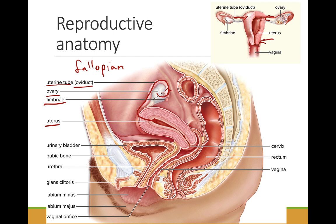The external genitals are called the vulva, which includes the labia majora, the labia minora, and the clitoris. Like the penis, the clitoris contains erectile tissue.